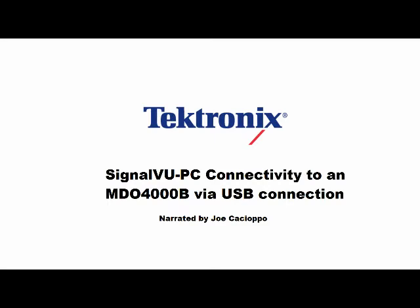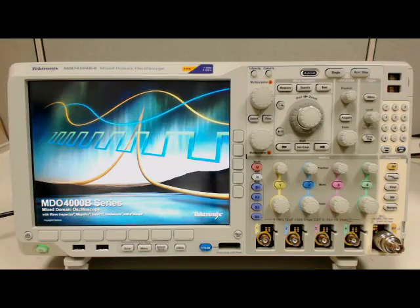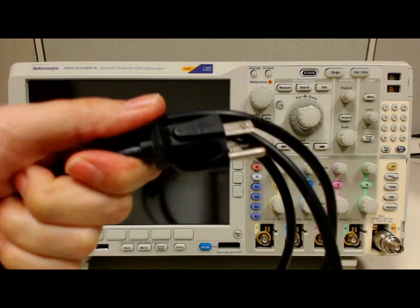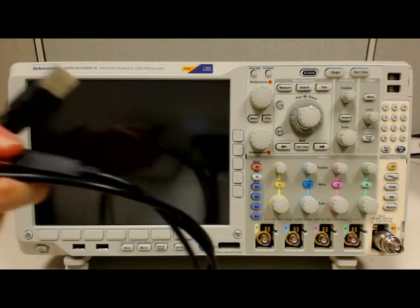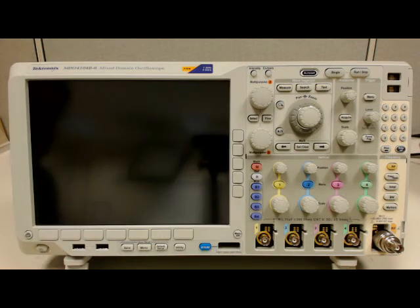The exact equipment and software versions used in this video will be displayed in text at the end of the video. To establish a connection, you will need some equipment. For this example, I am using a PC running the 64-bit version of Windows 7. You can find a complete list of compatible operating systems on the release notes for SignalView PC found on the Tektronix website. In addition to a PC, I am using an MDO-4104B-6 oscilloscope with firmware version 3.14 installed. You will also need a power cord to power your scope and a USB cable to establish communication to your PC.